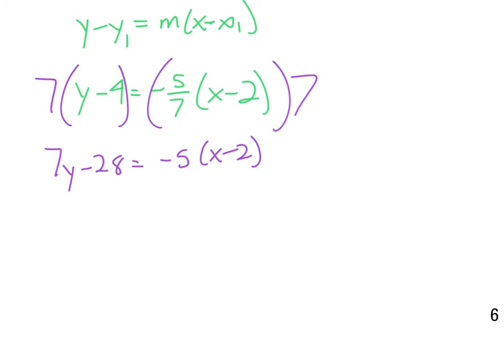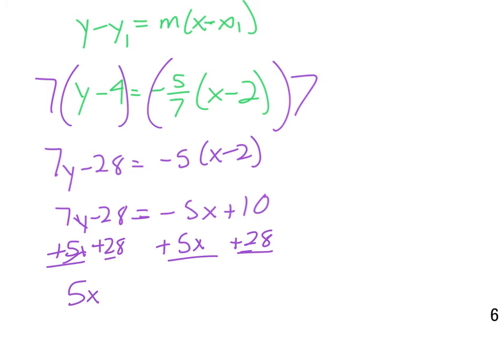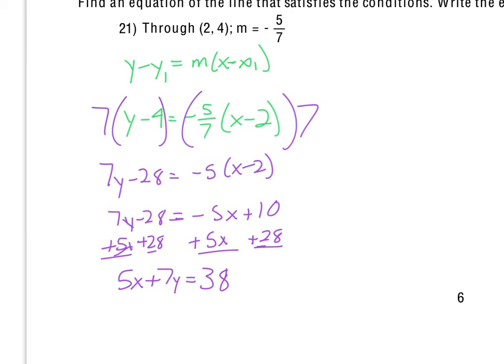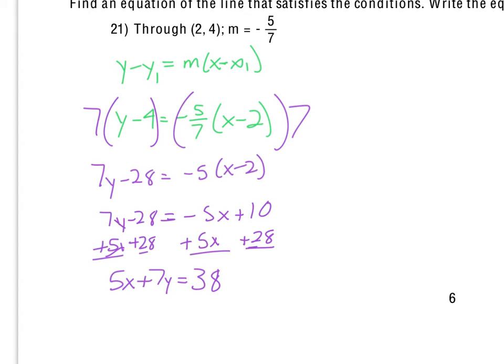So we can distribute the negative 5 into those parentheses. So we get negative 5x plus 10. All right, I want standard form. So I want to get the x's and y's on the same side. We do want that x to be positive. So I'll add that to both sides. If I'm putting those on the left, then I want the number on the right. So we get 5x plus 7y equals 38. That's the equation of a line that fits that information that goes through 2, 4 with a slope of negative 5 sevenths. And they wanted that in standard form. So there we go.